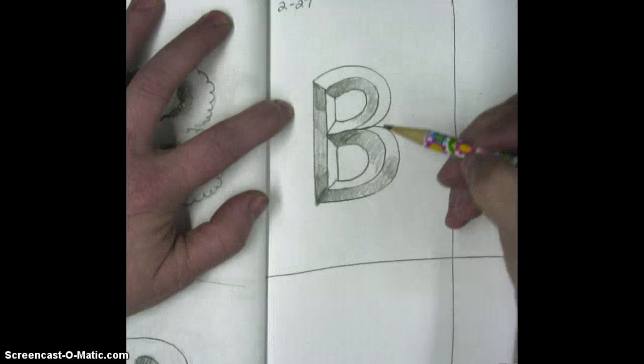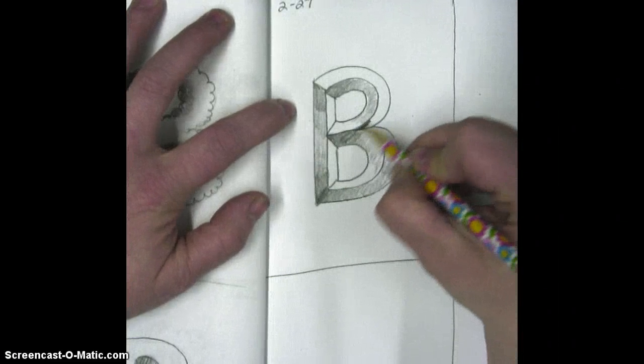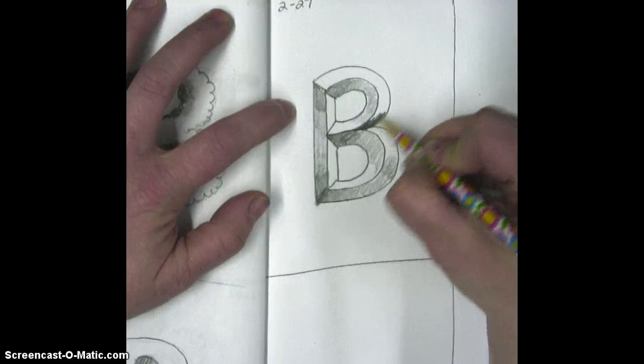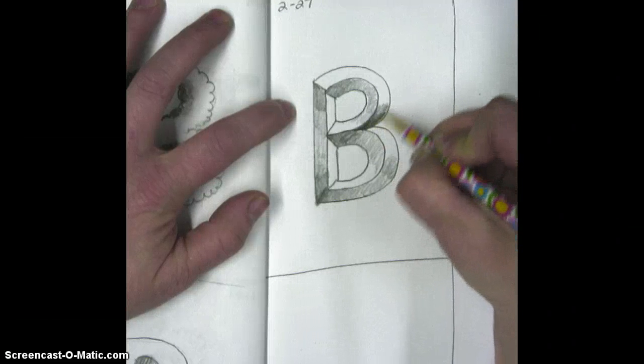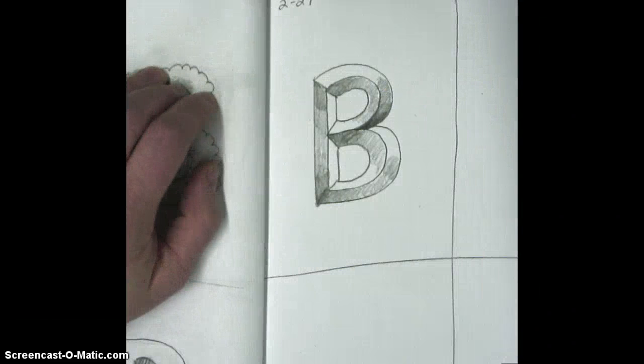Last shading on the inside of the B is going to be right in here. This is going to be fairly dark. And as you move up, lighten it up. Pretty easy.